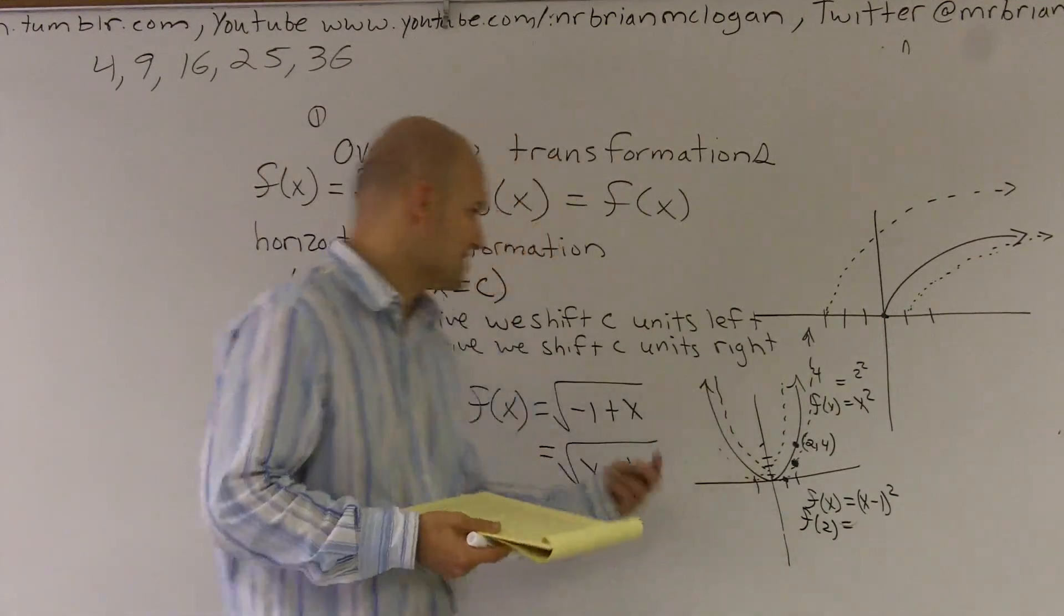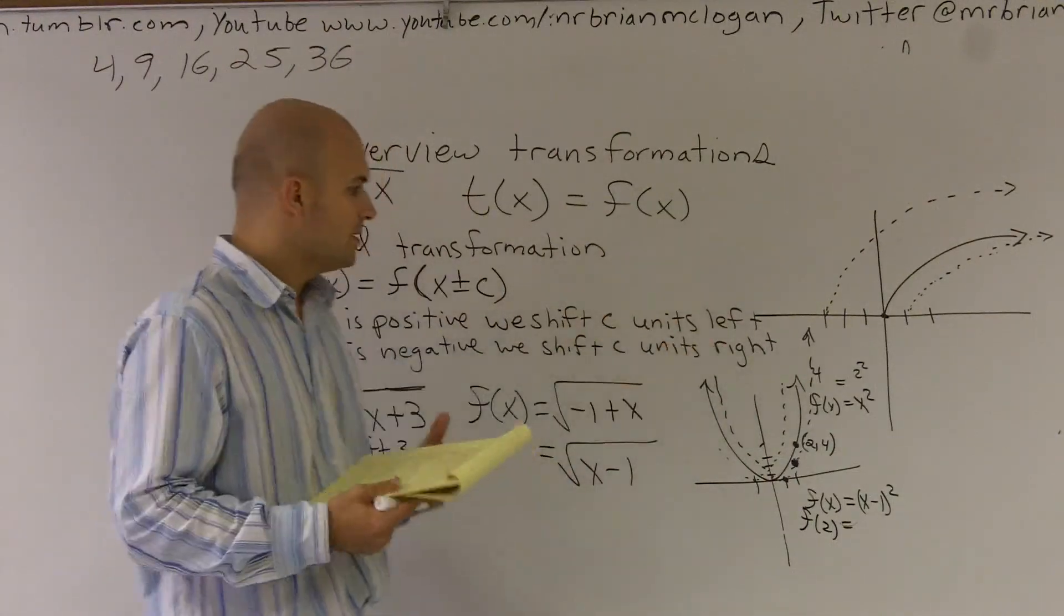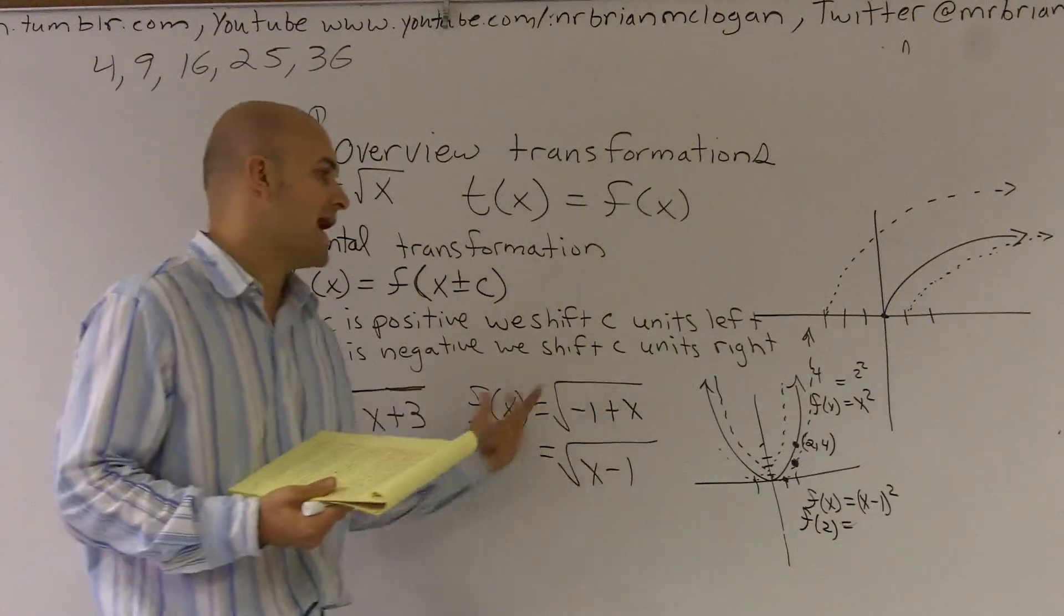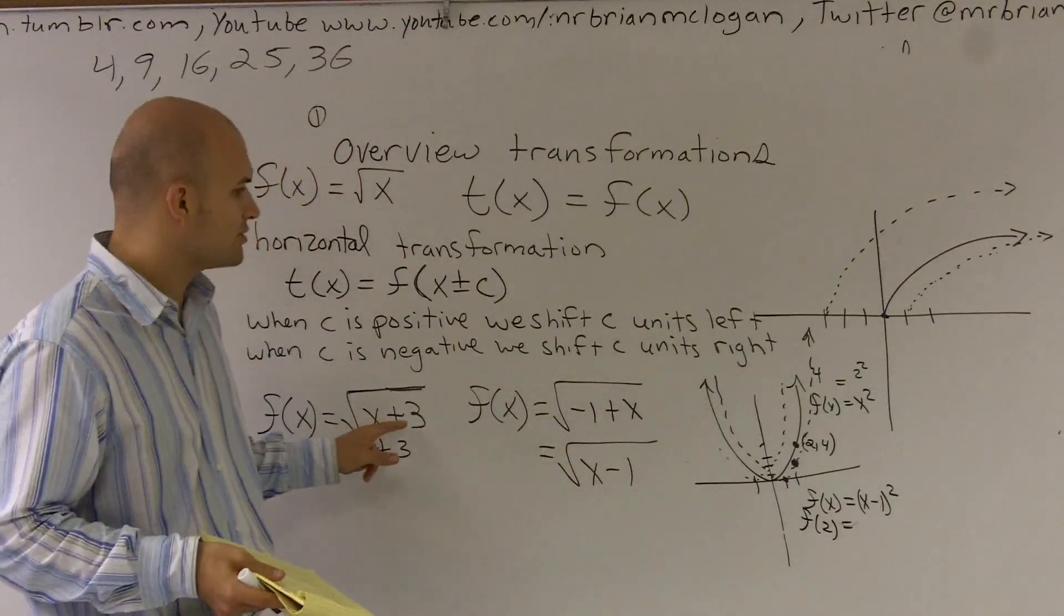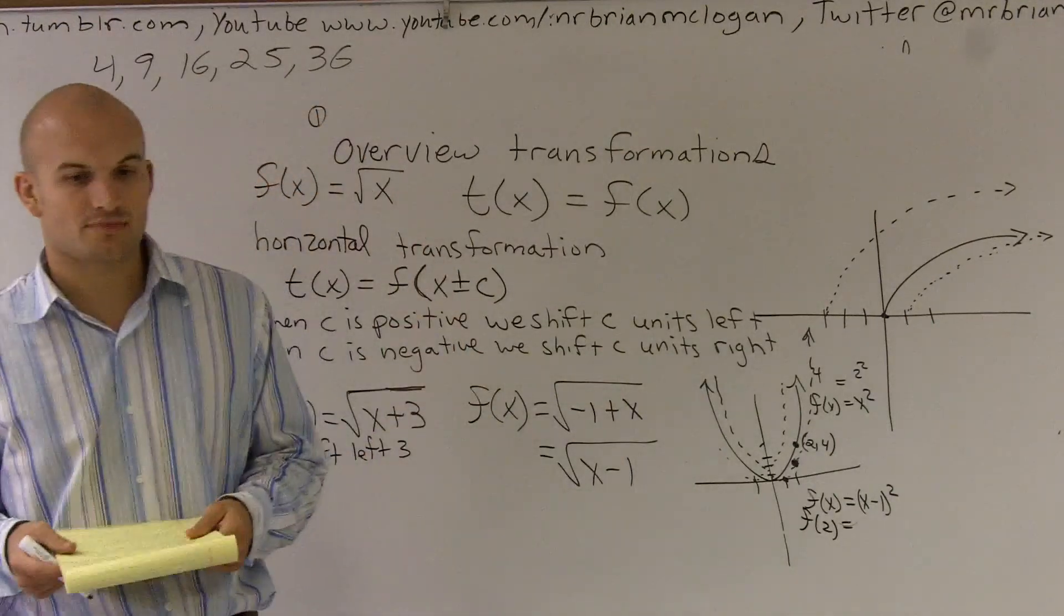So I know sometimes you're always going to get confused, because we always think of positive as up and to the right. But just remember when it's inside of that function, we're going to be dealing with actually the opposite. So when it's positive, you're going to shift to the left, and when it's negative, you're going to shift to the right. And that is your horizontal transformation.